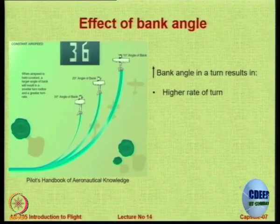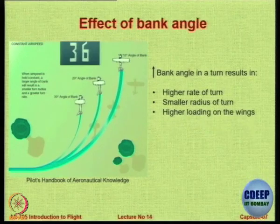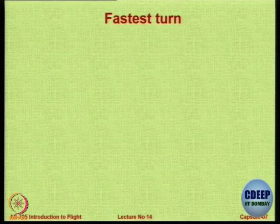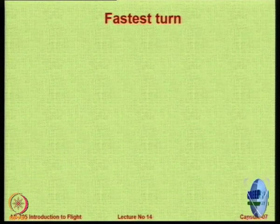Let us see the effect of bank angle. Banking at a lower angle gives a larger radius; banking at a smaller angle gives a smaller radius — that is why in the video shown earlier, the aircraft was at almost a 90-degree bank in a very tight turn. Increasing the bank angle results in a higher turn rate and a smaller radius of turn, but it also causes higher loading on the wings and the stall speed increases, which is dangerous.